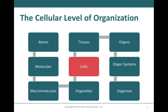Welcome everyone to Chapter 3's lecture video. Chapter 3 will be covering the cellular level of organization. In Chapter 2 we talked about how atoms combine to form molecules, and how molecules combine to form macromolecules. As macromolecules get larger and larger, they form structures known as cellular organelles, which we'll learn about today. When organelles come together, they give us the cell — that's our topic for discussion today.